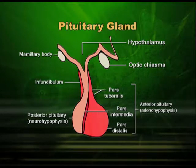Coming to the detail of the pituitary gland, it is also called hypophysis. It has three lobes: the anterior lobe, the posterior lobe, and the intermediate lobe. The anterior lobe is also known as pars distalis or adenohypophysis. The posterior lobe can also be called neurohypophysis or neural lobe. The intermediate lobe is called the intermediate lobe.